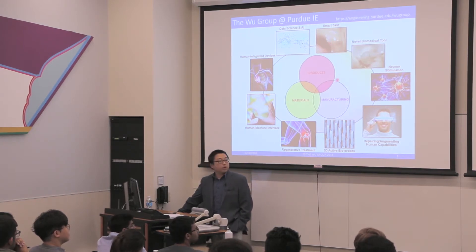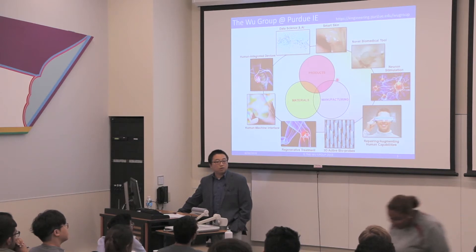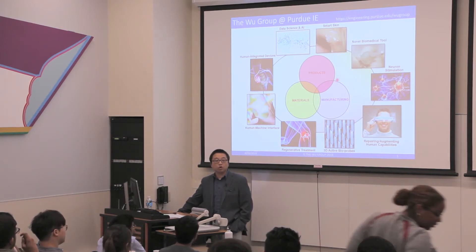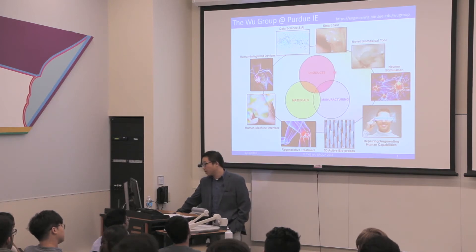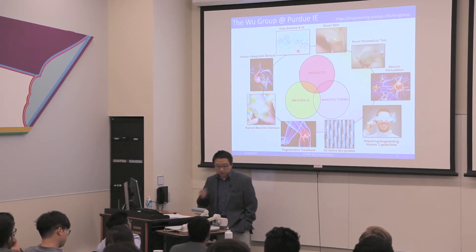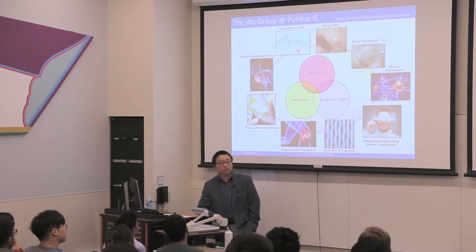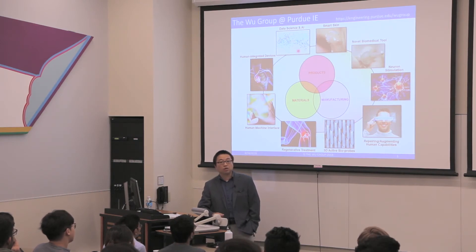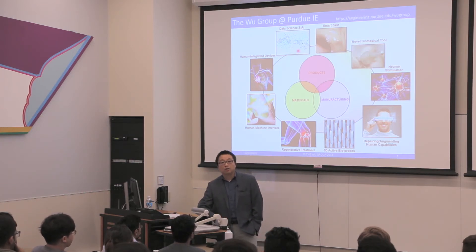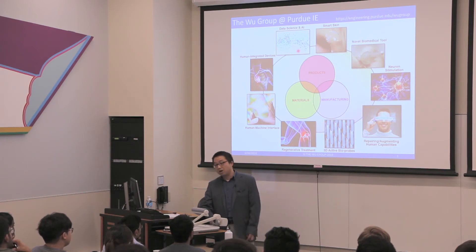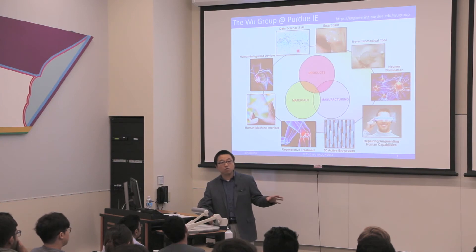When I moved to Purdue, Purdue IE has very strong faculty research in data science, in production, in optimization, in operational research. So we have been working with some of the colleagues here at Purdue IE, utilizing emerging data approaches like machine learning and artificial intelligence — those new frontiers — to help us better understand the phenomena at nanoscale or even atomic scale, and how we can control the manufacturing at that small scale.